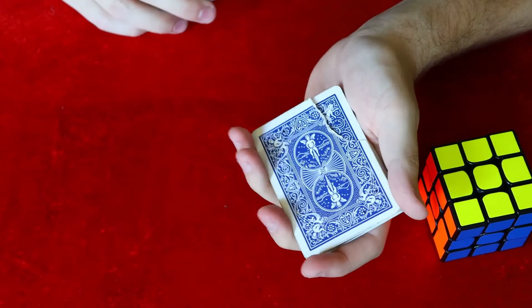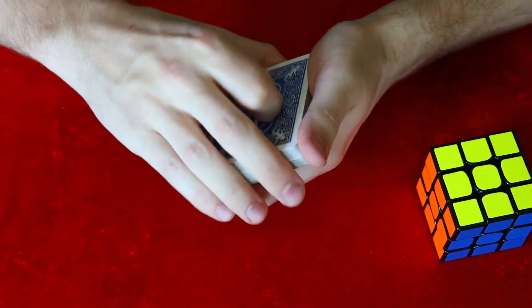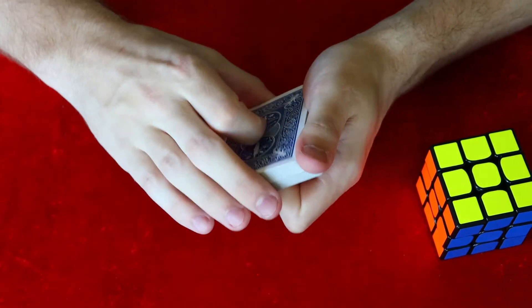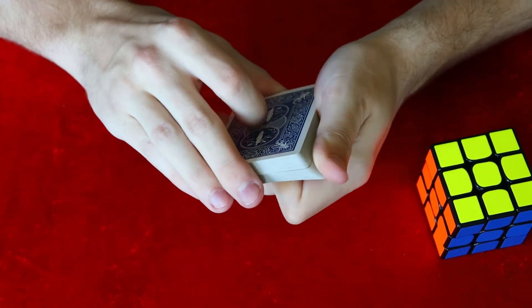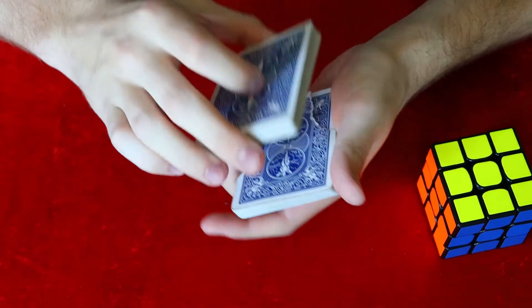Now you're just going to put your pinky right above this card. Put the pack on top. And then you're just going to force the card. So you're going to have them say stop. Wherever they say stop, you just lift up the pack right to where the ripped card is.